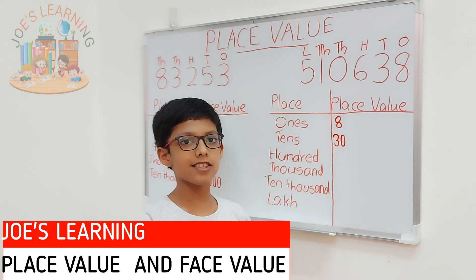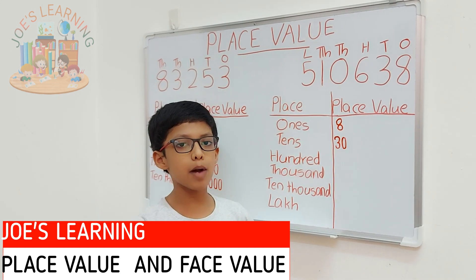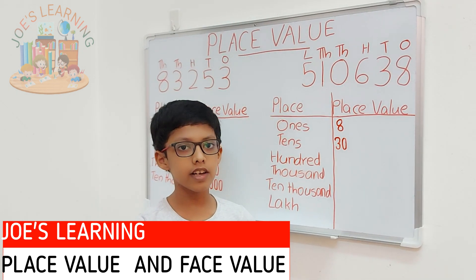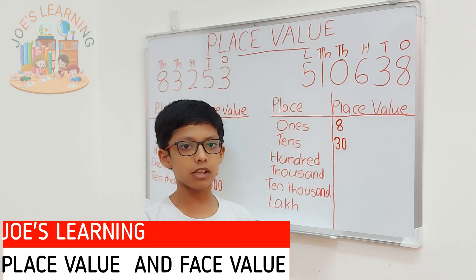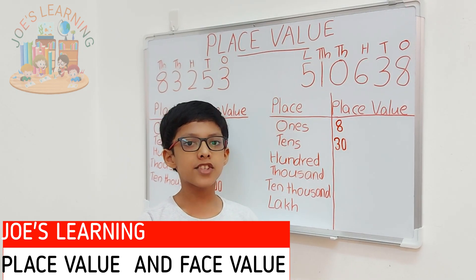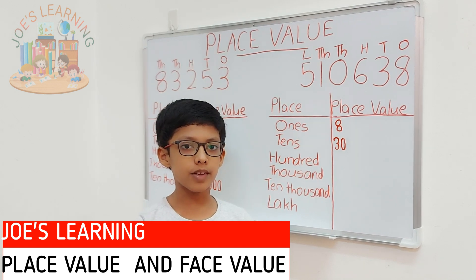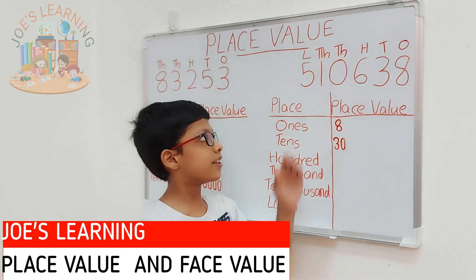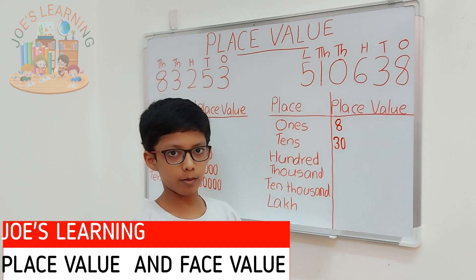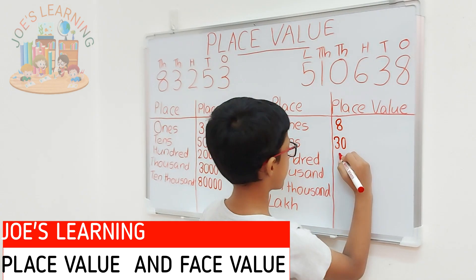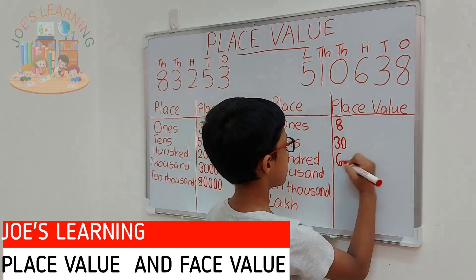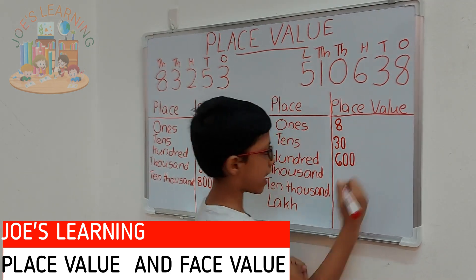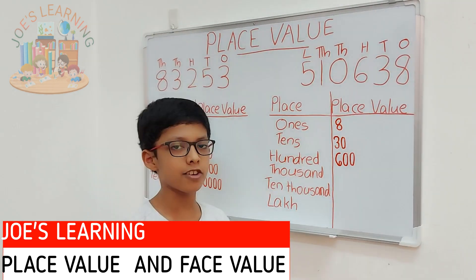Now, let's take a look at the hundreds place. 6 is in the hundreds place. So, we have to multiply it by 100. That equals to 600, which is the place value of 6 in this number. So, we can write down that 6's place value is 600.